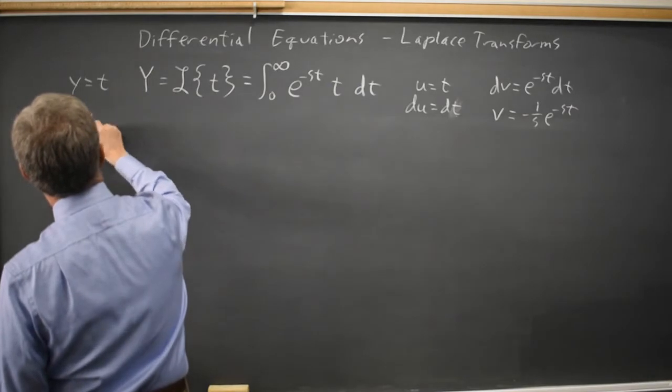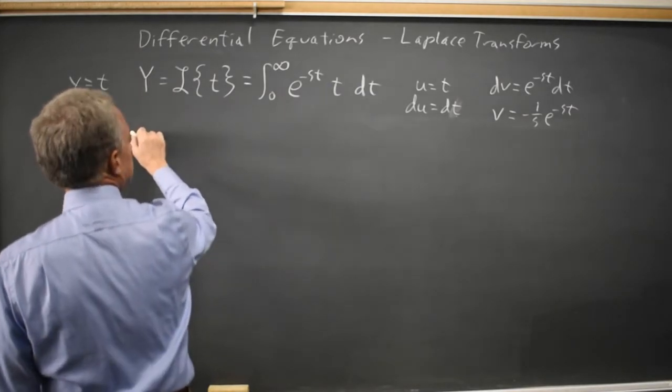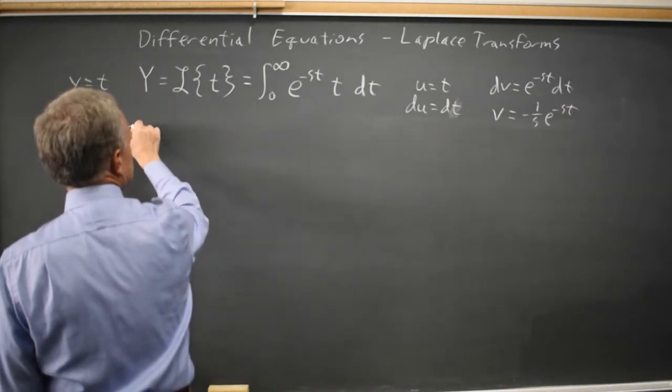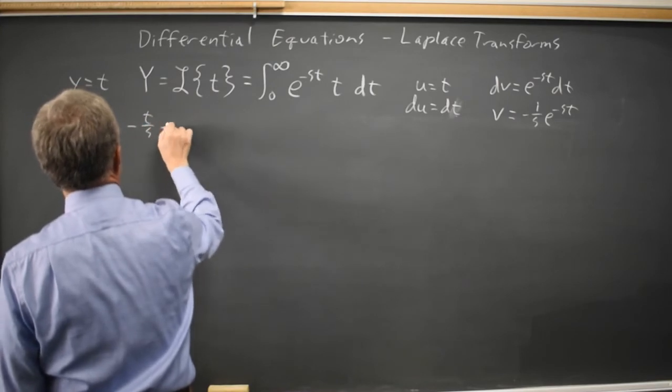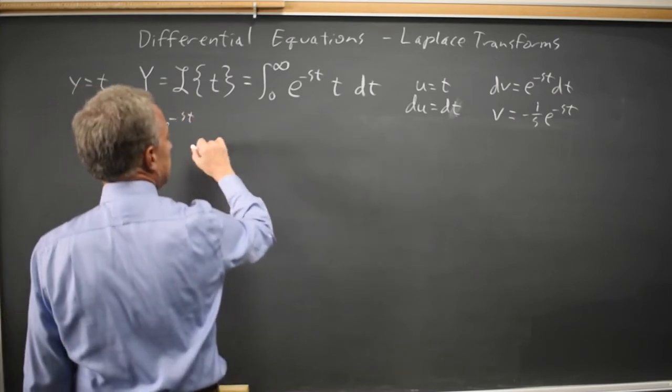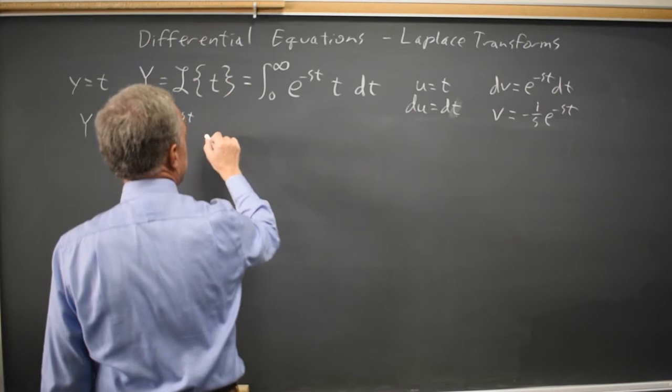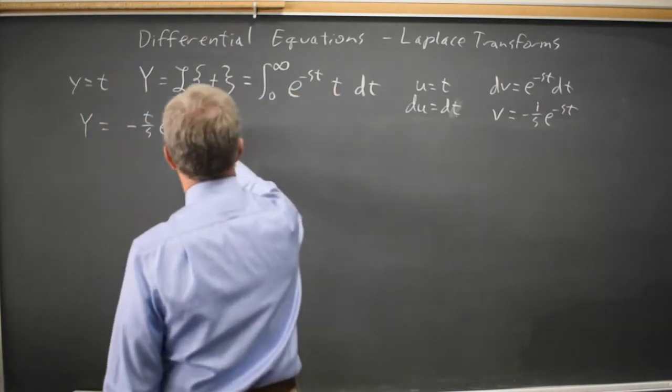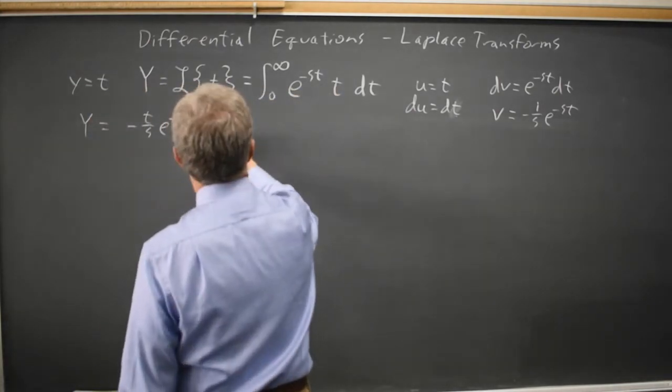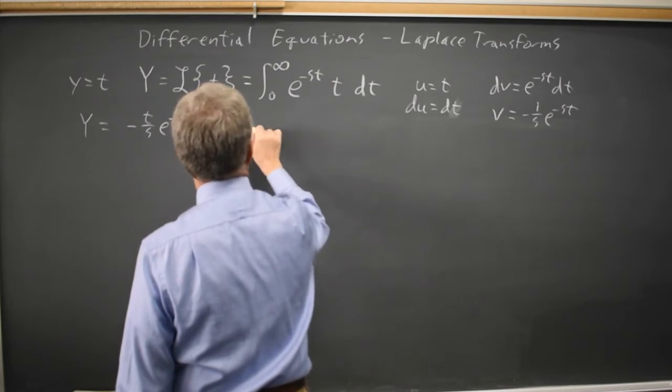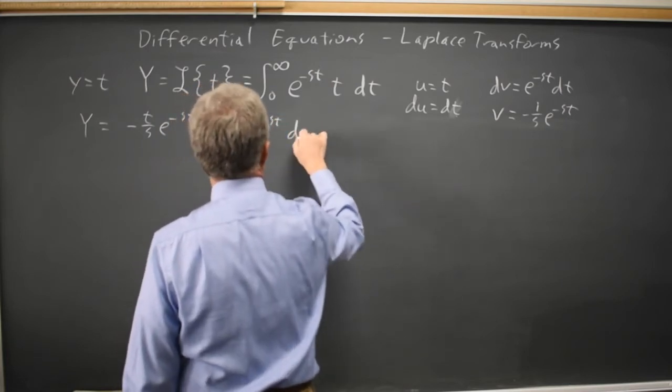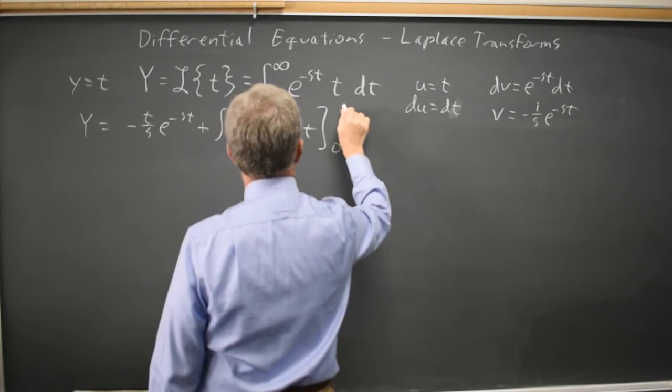So, uppercase Y, our transform, is uv: negative t over s e to the negative st, minus the integral of v du, which gives us plus the integral 1 over s e to the negative st, and all of that is from zero to infinity.